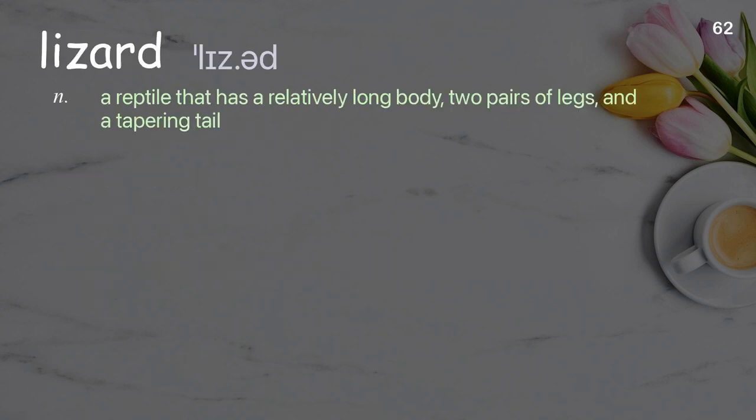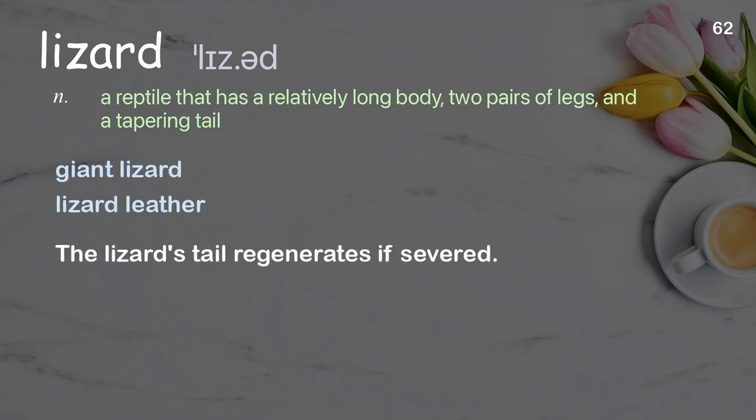Lizard: a reptile that has a relatively long body, two pairs of legs, and a tapering tail. Examples: giant lizard, lizard leather. The lizard's tail regenerates if severed.